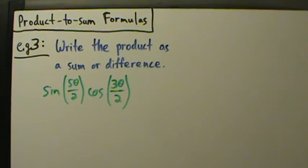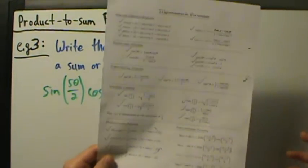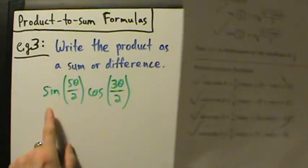So what we're going to do is go back to our formula sheet here. If you want a copy of this, check the video description. There's a link in there you can click to get a copy. We're going to use this third product-to-sum formula here, sine α cosine β, because we have sine of something times the cosine of something else.